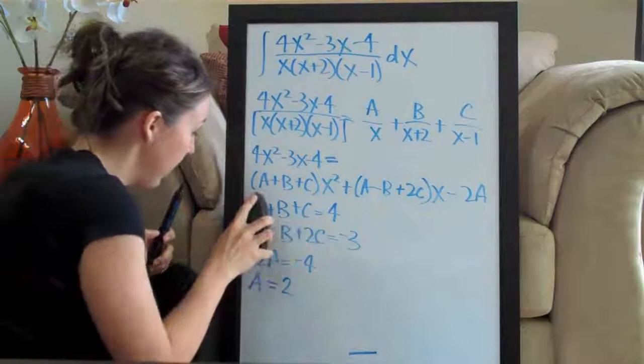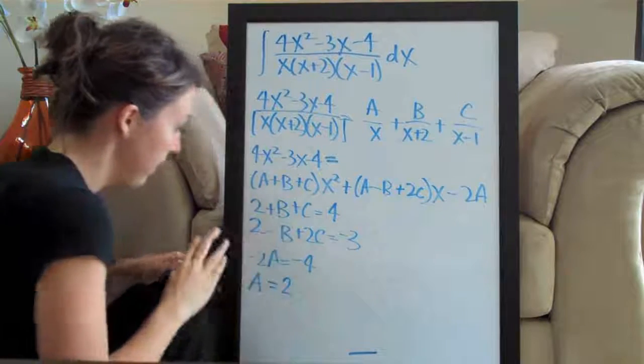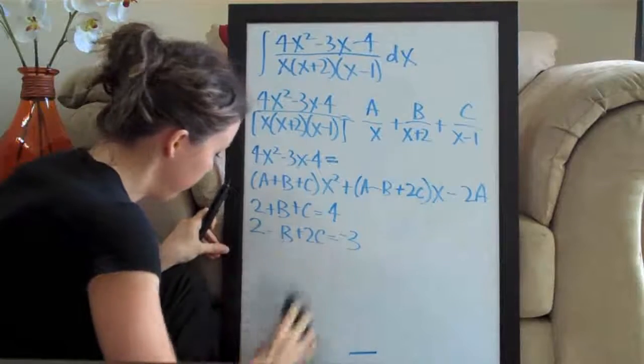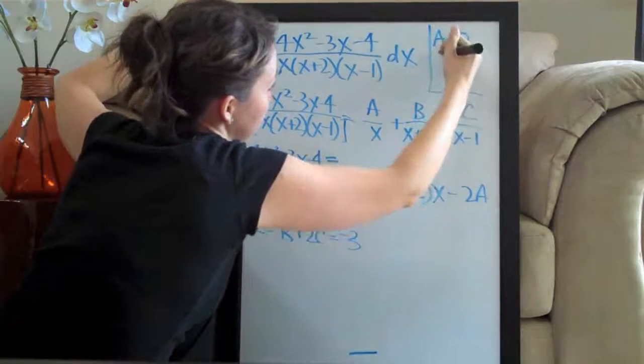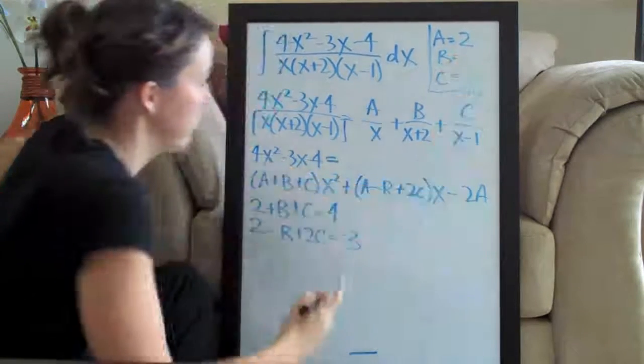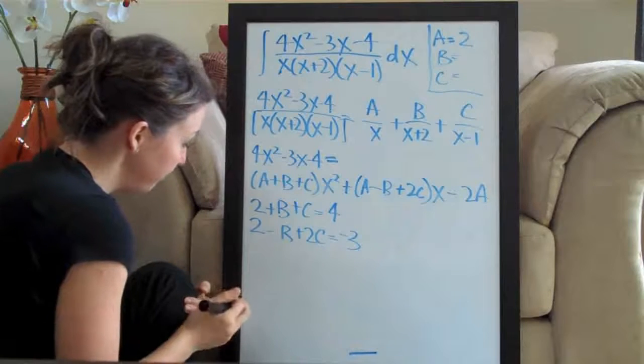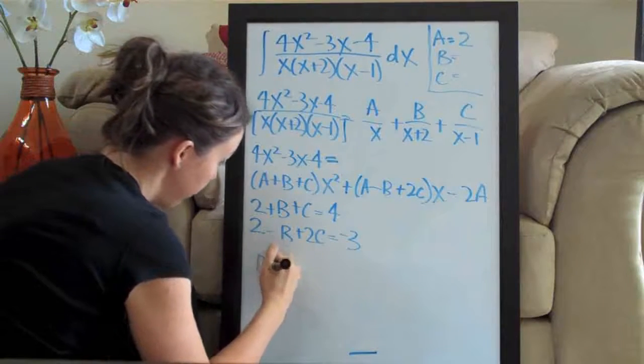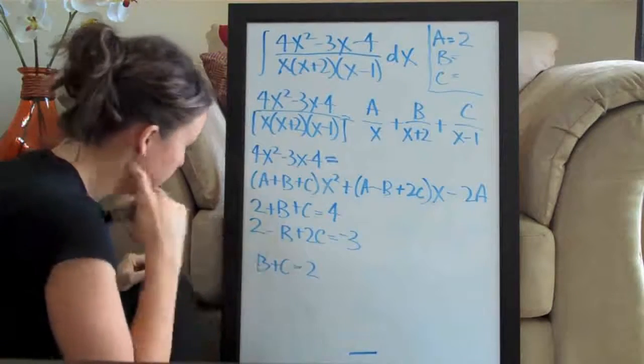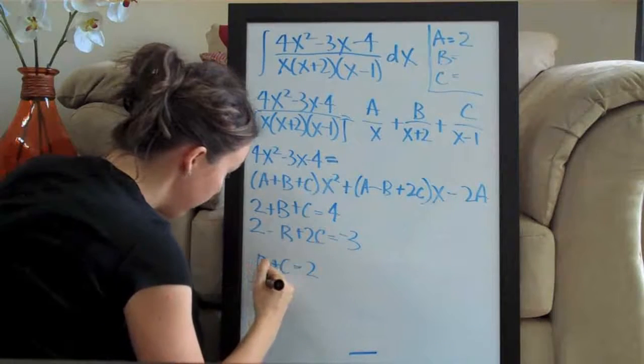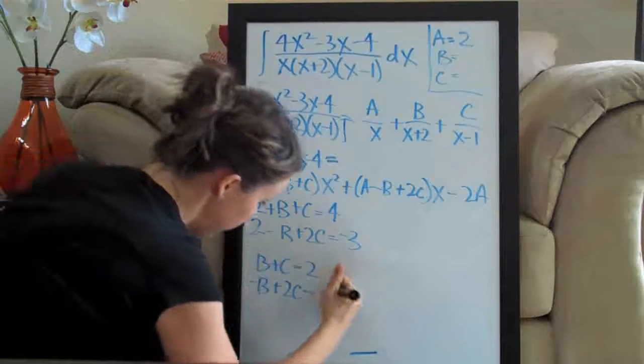So let's go ahead and plug 2 back in for a to these two, so we're going to end up with 2 here. We'll say a equals 2. We're going to have to solve for b as well and c, so we have to still find those. Let's go ahead and simplify these equations. So the first one is going to become b plus c equals 2, I subtracted 2 from both sides. And the second one, we will subtract 2 from both sides and we'll end up with negative b plus 2c equals negative 5.